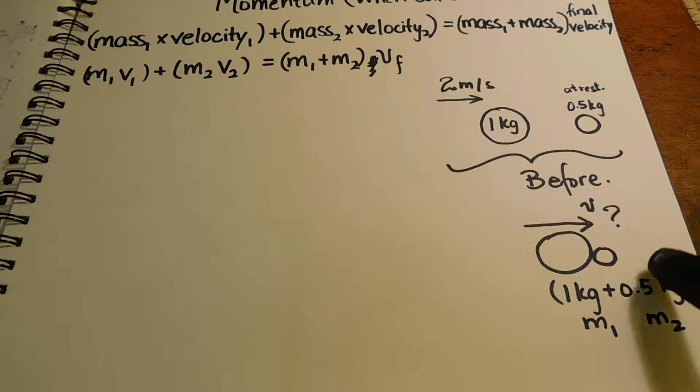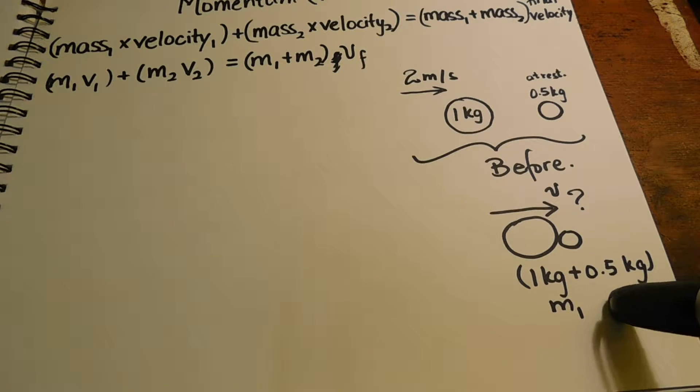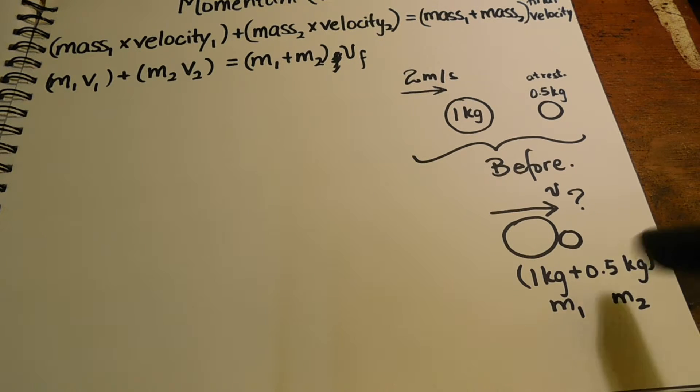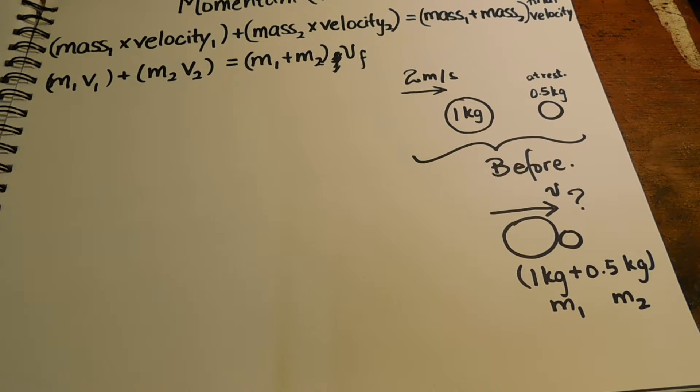And after what happened, the two of them got stuck together so you would have one mass, a final mass. And that one mass is where you want to determine what the overall velocity was of the two bodies that stuck together.